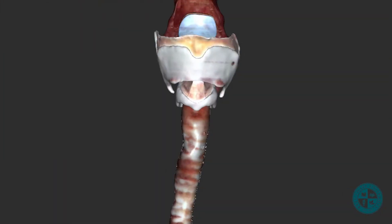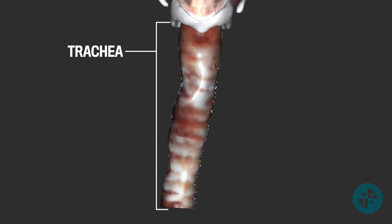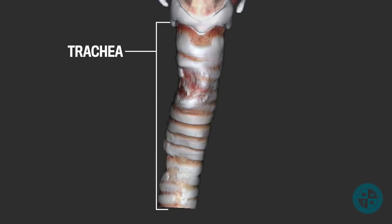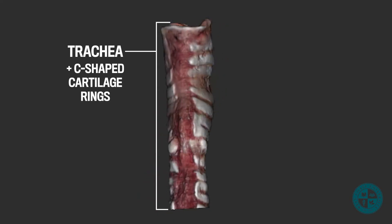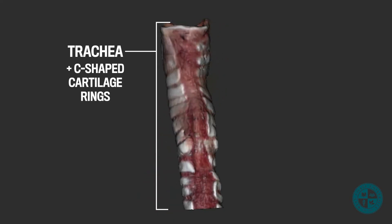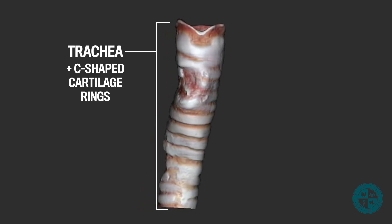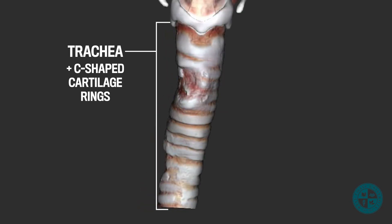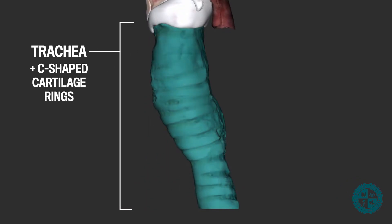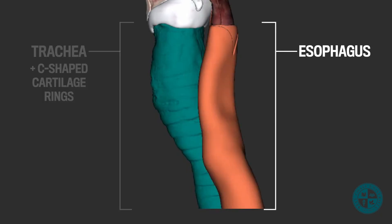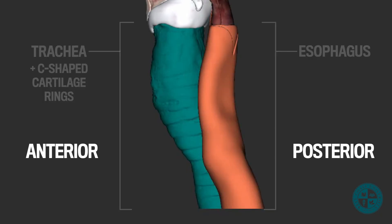After the air exits the larynx, it will enter the trachea. The trachea contains C-shaped tracheal cartilage rings. Again, the cartilage serves to ensure that the airway stays open. The reason why these rings are C-shaped instead of a full circle is because of the relationship between the trachea and the esophagus. The esophagus is located directly posterior to the trachea, so when we swallow food, the posterior tracheal wall can accommodate the food bolus.